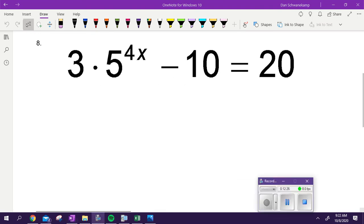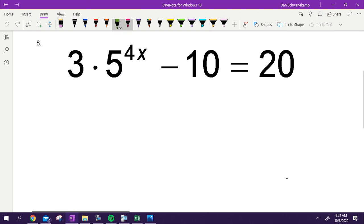Next one. Solve it. You guys are doing well, you're not having any issues solving it, but just make sure we can do it. We add 10, add 10, so we get 30. 3 times 5 to the 4x. We don't want to put that 3 in there, we want to get rid of that 3, so we divide by 3.